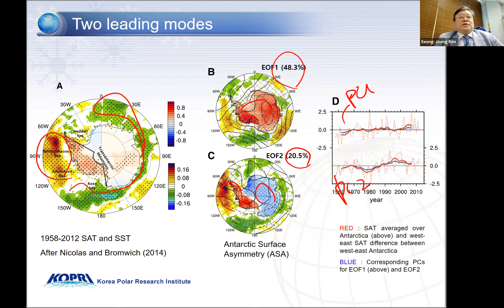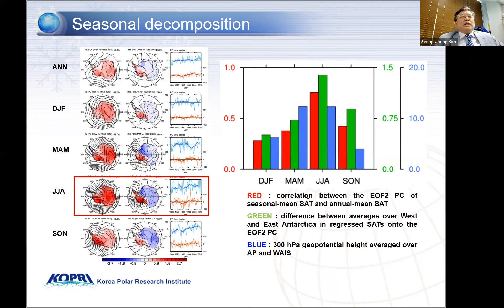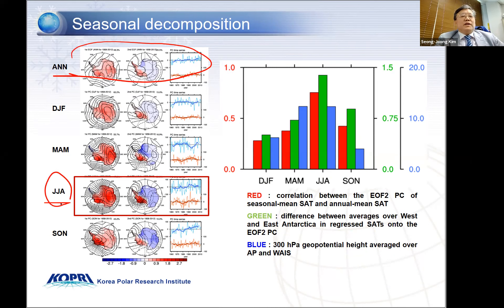From this figure, we can see that EOF1 is more or less entire Antarctica driven externally, and EOF2 is more or less driven by internal climate variability. We also checked seasonally, and which season contributed most to this annual mean field. We found out that the austral winter result contributed largest to the annual mean, both EOF1 and EOF2. The right-hand side shows the correlation between seasonal mean EOF2 and annual mean — the biggest contribution, again, is from the austral winter season.